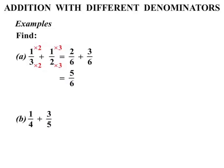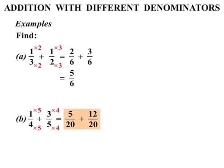The next one: one quarter plus three fifths. The denominators are different, so we need a common denominator. What number do four and five both go into? They both go into twenty. So let's write the first fraction over twenty, plus the second fraction over twenty. To change four to twenty, we times by five — top and bottom. To change five to twenty, we times by four — top and bottom. So we get one times five is five, and three times four is twelve. Five twentieths plus twelve twentieths gives us seventeen twentieths.